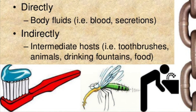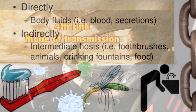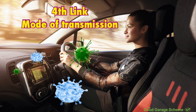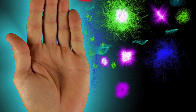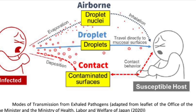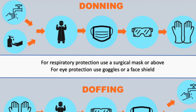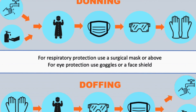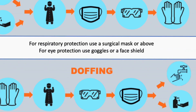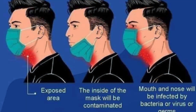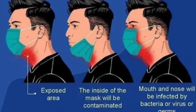The fourth link is the mode of transmission. This is where pathogens travel from one place to another, even via your own hands. The different types of transmission are via contact — direct and indirect — droplet, and airborne. The way to break this chain is by using appropriate PPE and making sure to use and remove it in the proper sequence to avoid contaminating yourself. It is your first line of defense, but if used improperly, it can cause more harm than good.